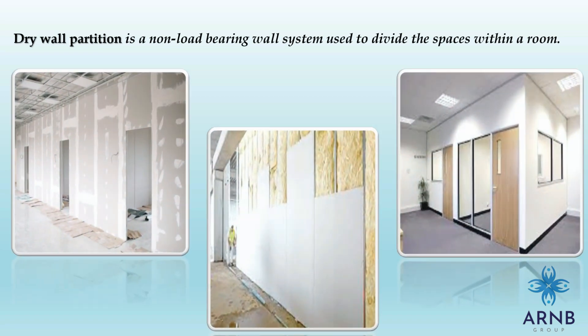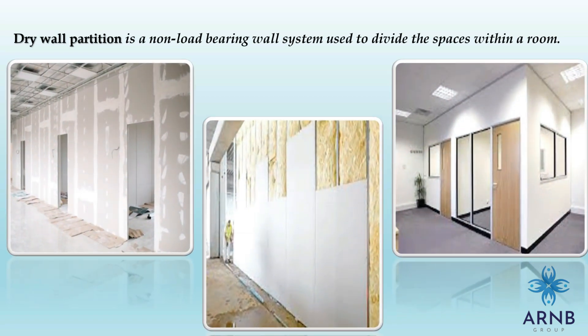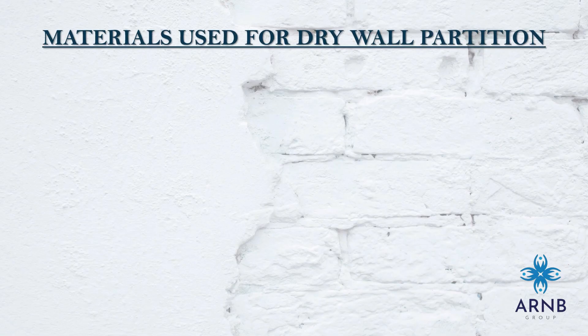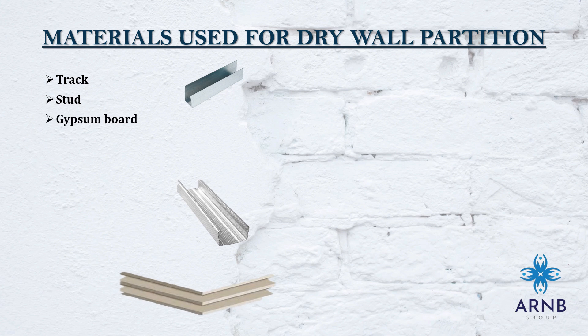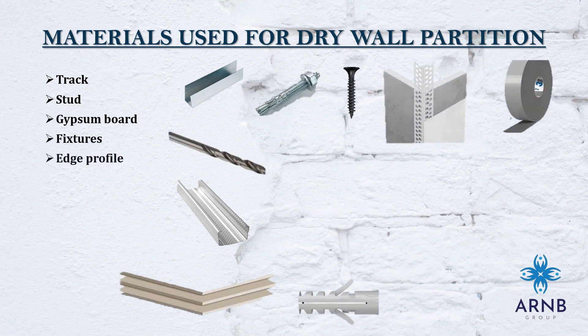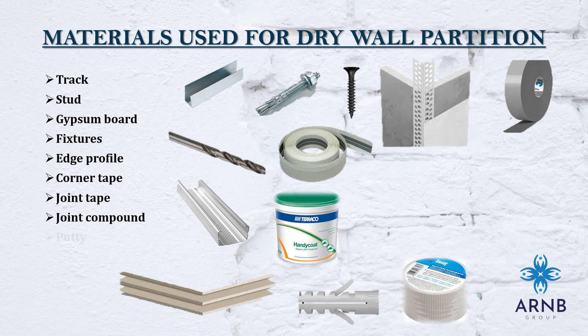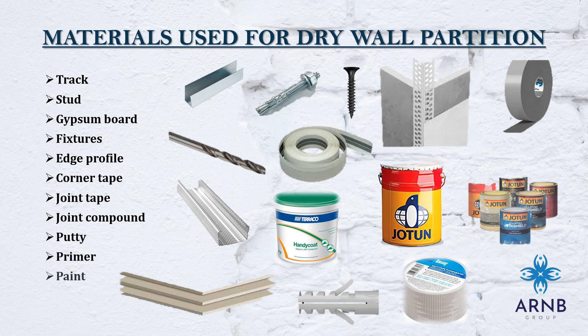Dry wall partition is a non-load bearing wall system used to divide the spaces within a room. Materials used for dry wall partition include: track, stud, gypsum board, fixtures, edge profile, corner tape, joint tape, joint compound, putty, primer and paint.